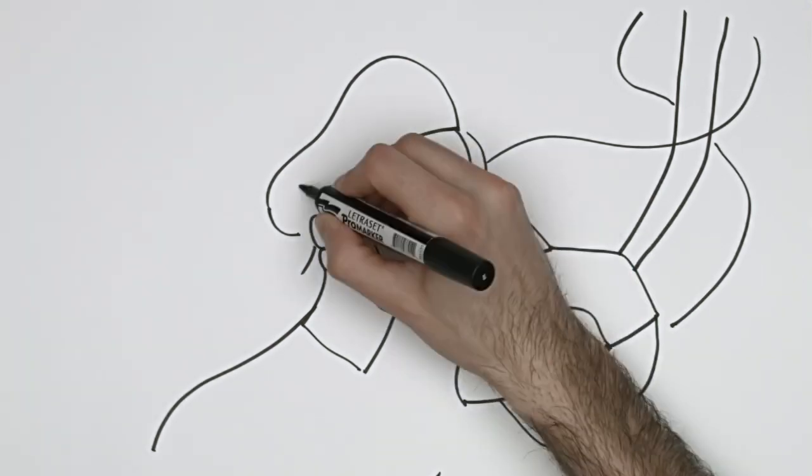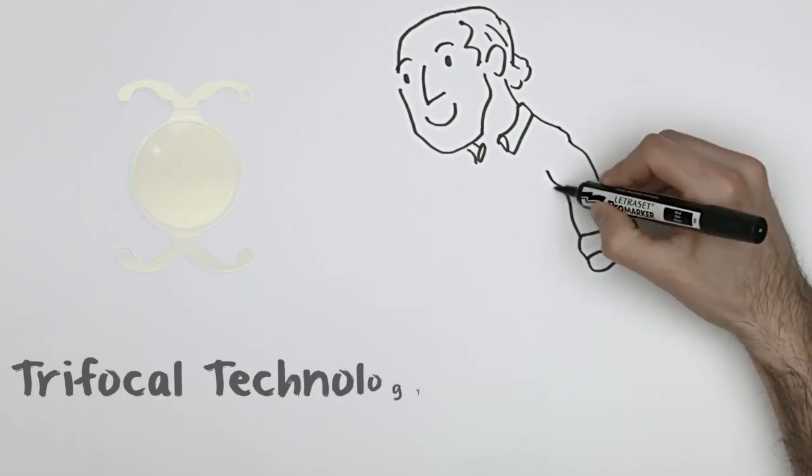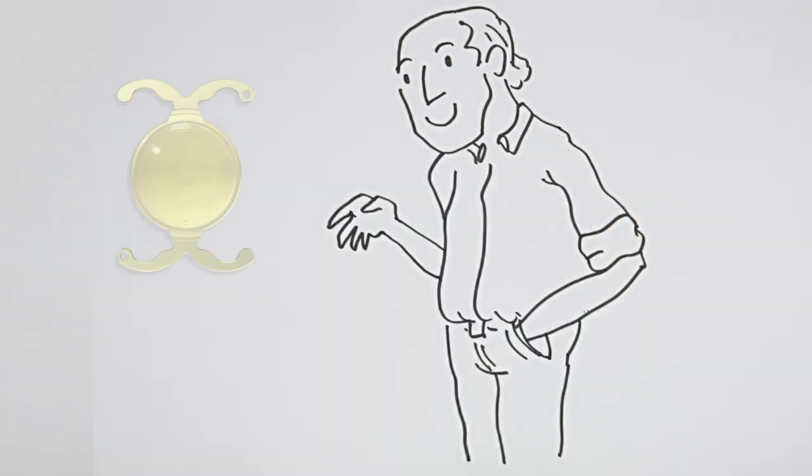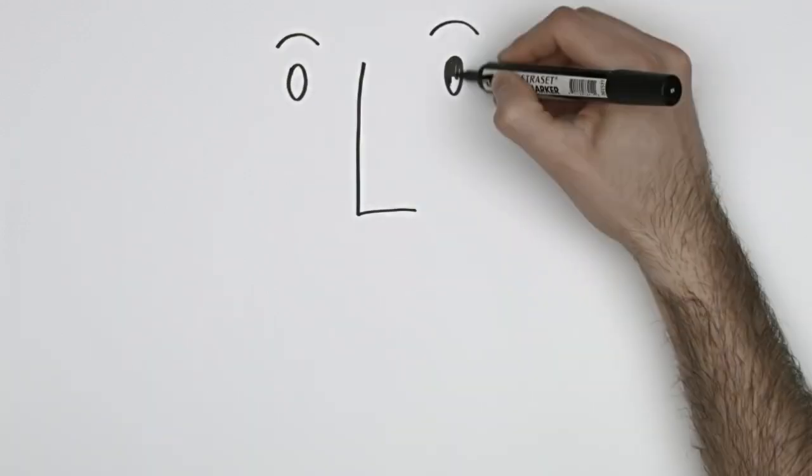The trifocal intraocular lens can correct your previous conditions, be it presbyopia, astigmatism, myopia, or hyperopia. It means getting rid of your glasses forever. The patient already has very good vision the day after the intervention and within 48 hours can resume work with all normality.